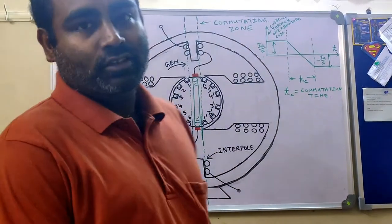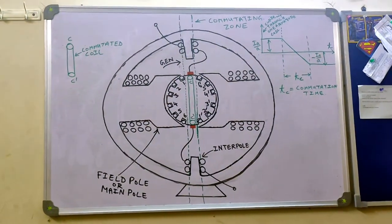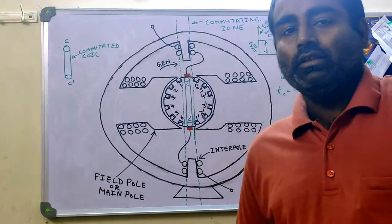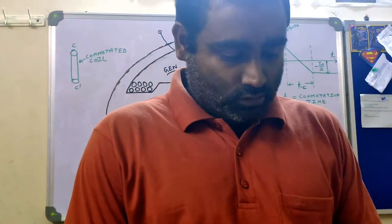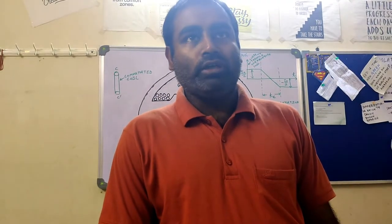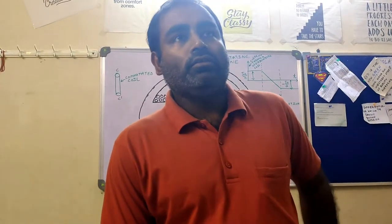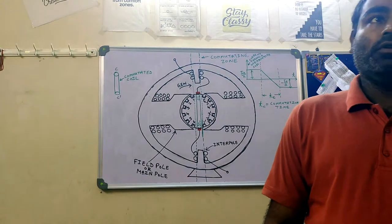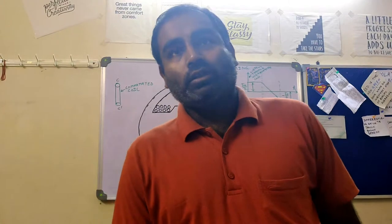Hello everyone. Today I will be making an attempt in this video to explain the utility of interpoles in a DC machine. Interpoles are also known as commutating poles or comm poles, and the function of interpoles is to help or aid in the commutation in a DC machine.